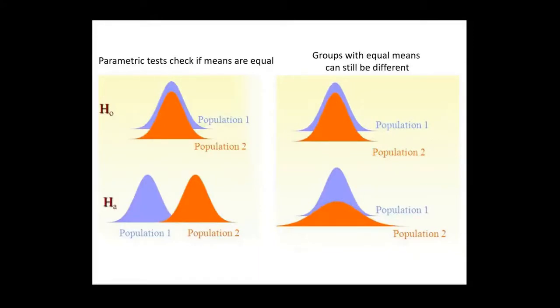What a parametric test will check is the centers of the two groups—are the peaks of the two groups the same or not? So this is what it will check.